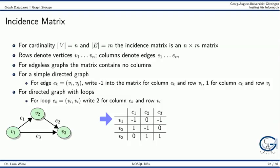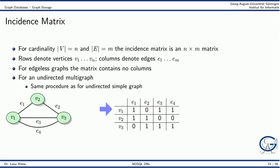For directed graphs, we encode the source node by minus 1 and the target node by 1 in the incidence matrix. In our example, V1 is the source node for edge E1 and V2 is the target node. When representing loops in a directed graph, we still write 2 for the loop edge column and the row of the corresponding node. For multigraphs, there is no difference from a simple graph because edges have their own columns. The same applies to a directed multigraph — it is treated the same as a directed simple graph.